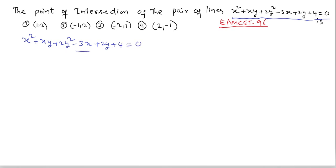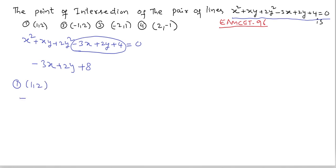Take the linear part: -3x + 2y, multiplying by the constant term 2 gives 8. Substituting first point (1, 2): -3 + 4 + 8 = 12 - 3 = 9, which is not equal to zero. First option is not correct.